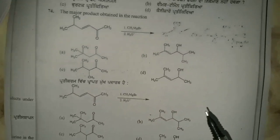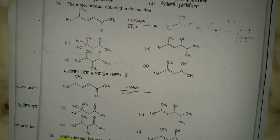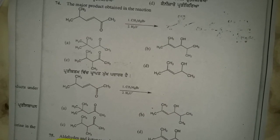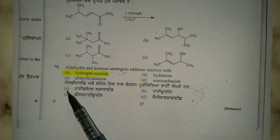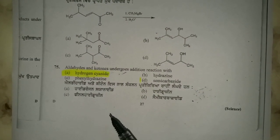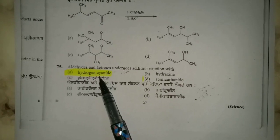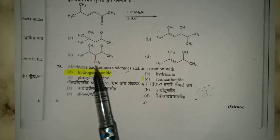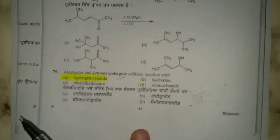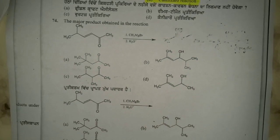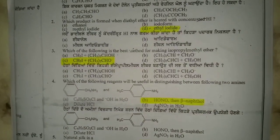Question 74 was not visible clearly — if you don't find the answer, research it yourself. Last question: aldehydes and ketones undergo addition reaction with hydrogen cyanide. Study this topic well. I hope this fully solved previous year chemistry paper video was very helpful for your preparation.